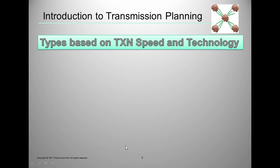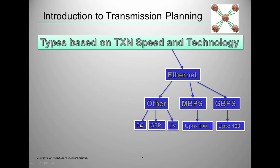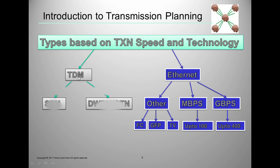Based on transmission speed, we have two main technologies. Ethernet can go up to gigabits or megabits per second. At the Mbps level we can reach up to 100 Mbps on Ethernet or copper cables, while at gigabit level we can go up to 400 Gbps, which requires optical fiber. There are also technologies like Fibre Channel used for storage area networks, GFP, and OTN. The other major technology is TDM, which is a legacy time-slot-based technology that has evolved into DWDM and OTN.